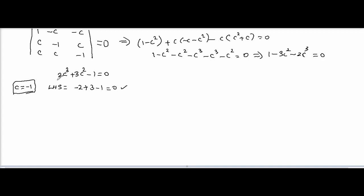Now you can divide to find the other roots using synthetic division. C equal to minus 1 divided. The coefficients are c cube coefficient 2, c square coefficient 3, c coefficient is 0, and constant is minus 1.